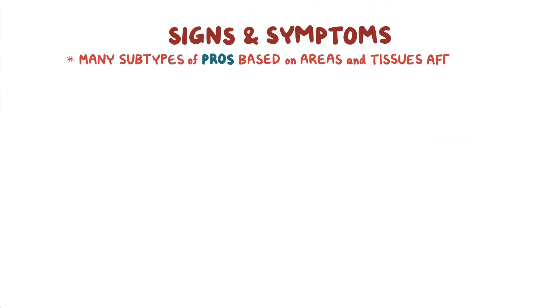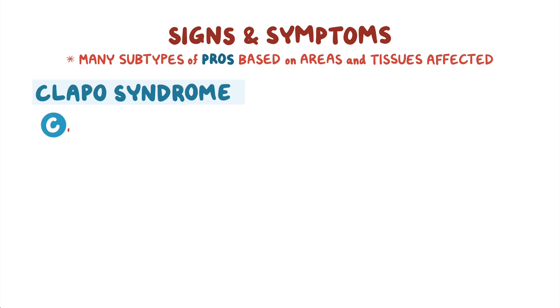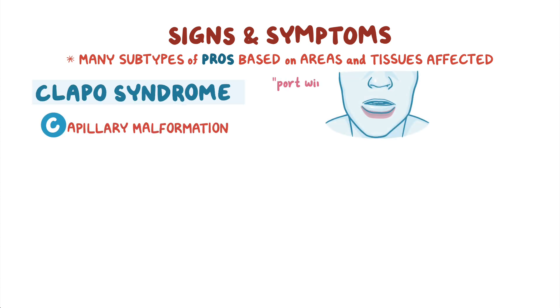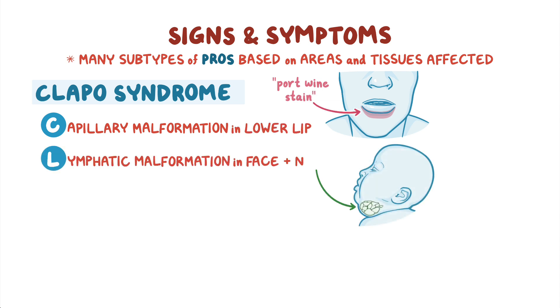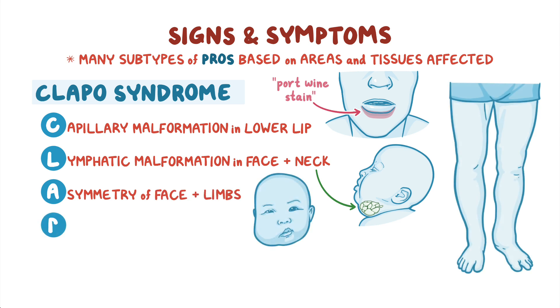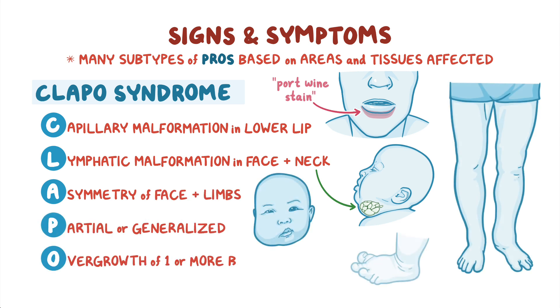There are many subtypes of PROS, based on the areas and tissues affected. CLAPS syndrome involves capillary malformation, also known as port wine stain, in the lower lip, lymphatic malformation in the face and neck, asymmetry of the face and limbs, and partial or generalized overgrowth of one or more body segments.